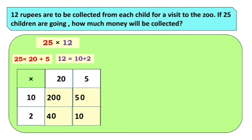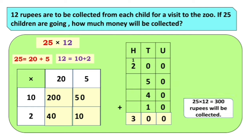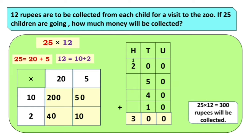Aata next step kai asna rahe mula no? Apan je multiplication kelelya aahe ya boxes madhe, te sagave je multiplication ze je products aahet, je answers aahet — tansa addition karanat. So 200 plus 50 plus 40 plus 10. Unit place madhe 0 plus 0 plus 0 plus 0. Tenth place var 0 plus 5 plus 4 plus 1 is equal to 10. So we will write 0 over here and 1 will go on the 100th place. 1 plus 2 is equal to 3. So our answer is 300. The final answer is 25 × 12 is equal to 300 — 300 rupees will be collected.